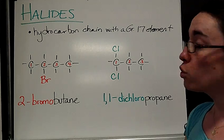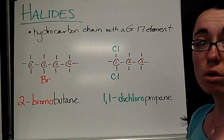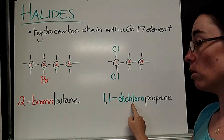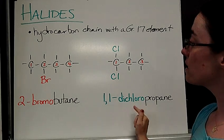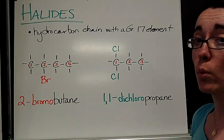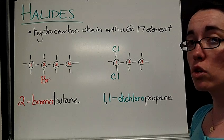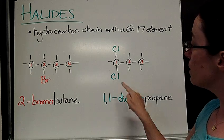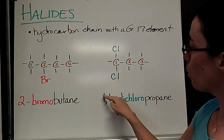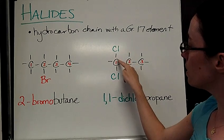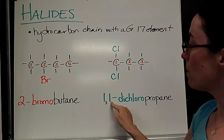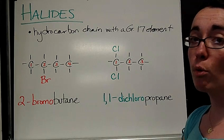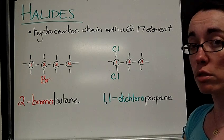This one I added a little twist because there are two chlorines. It's called dichloro. And the icing on the cake, you have to indicate with numbers on which carbon each of those chlorines is located. And so this chlorine is on carbon number one and this chlorine is on carbon number one. So I have 1,1-dichloropropane and that's how you would name both of those structures.